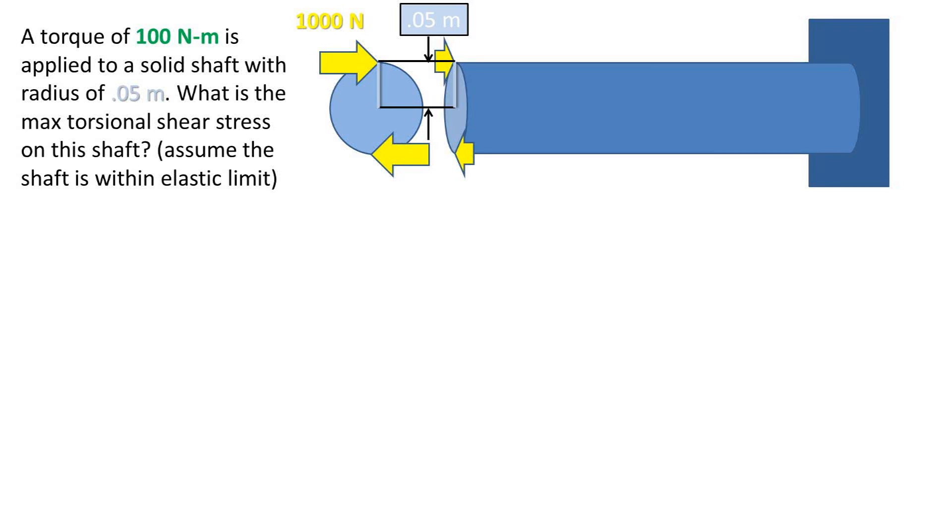In this problem, we have a circular rod that is fixed at one end and has a torque of 100 newton meters applied to it. This solid circular shaft has a radius of 0.05 meters. We want to find the max torsional stress on this shaft. We will assume that the shaft is within the elastic limit of the material.